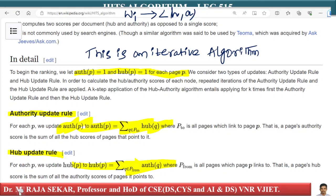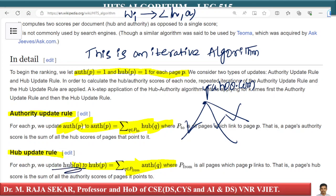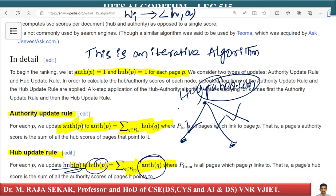For example, consider Yahoo.com as a directory — prior to Google days it had many outlinks. To calculate the updated hub value of page p: for every q that p links to, sum the authority score of q. So my hub score is the summation of all the authority scores of all the pages that I am linking out to.